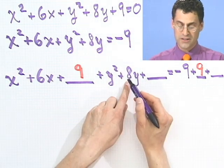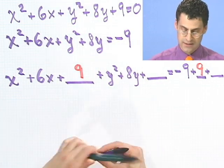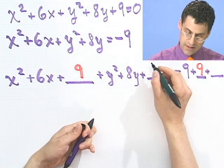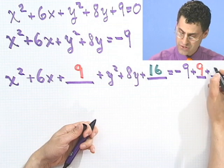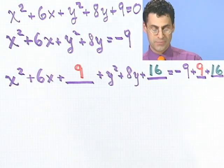I do the same thing here. I look at 8, take half of it and get 4, and then square 4, and I get 16. And that's the term I add here. Now, if I add 16 to both sides, I don't change the truth of this equality. It's still equal. But now, look what happens.